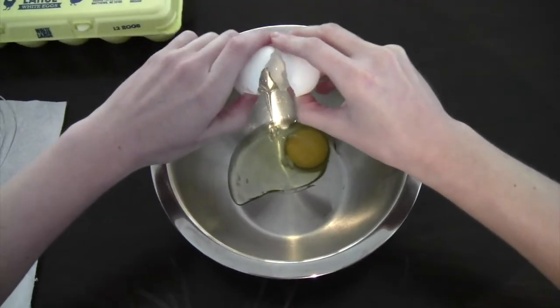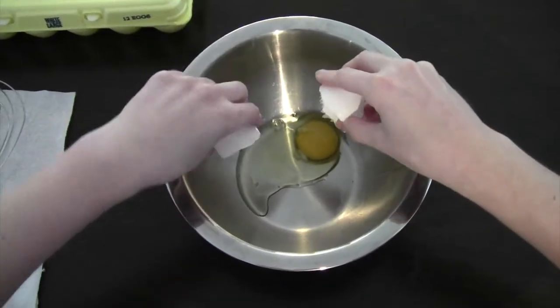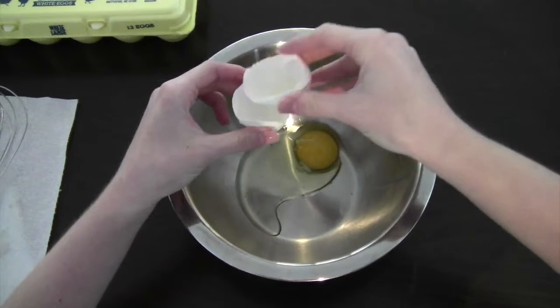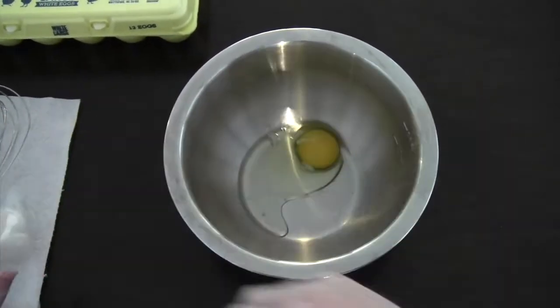And if you get any shells in it, you can just scoop the shells out either with the shell here or you can use a spoon. And that's how we crack an egg.